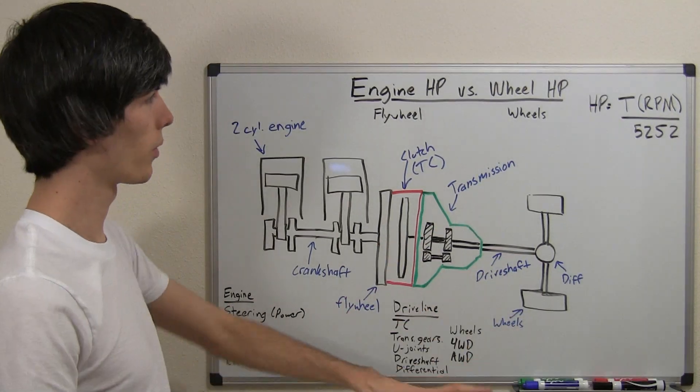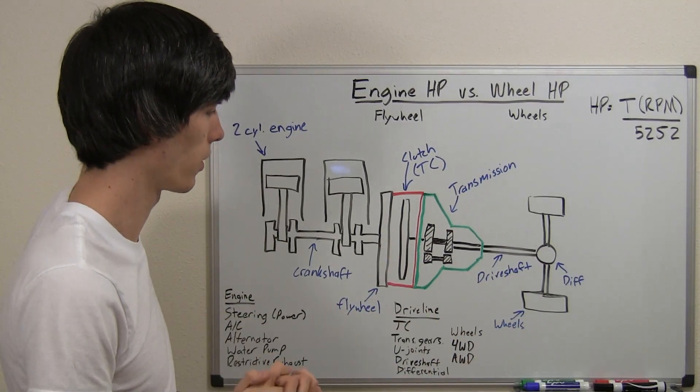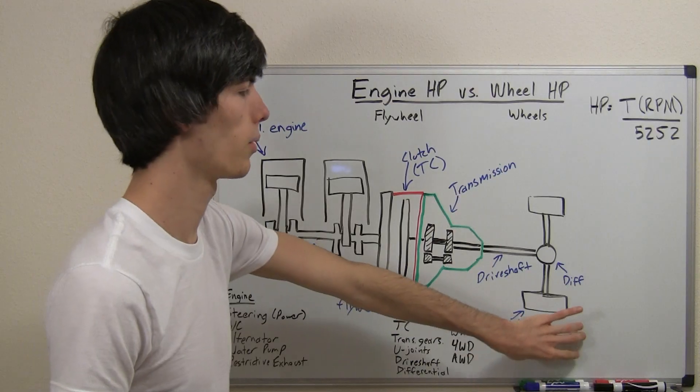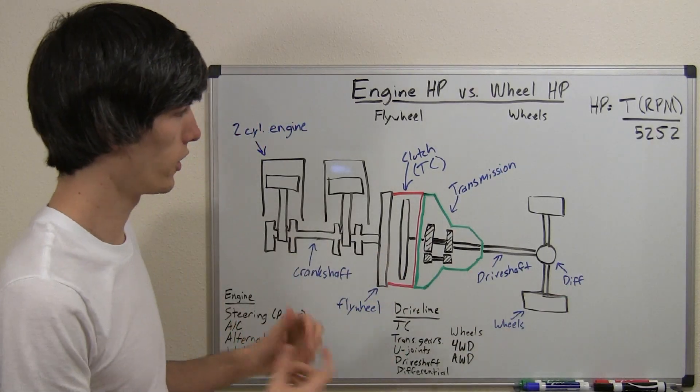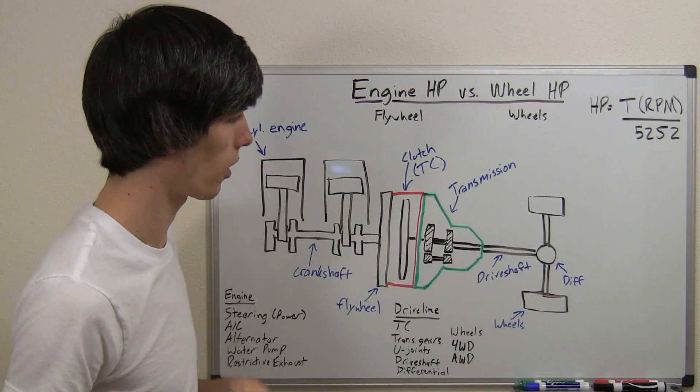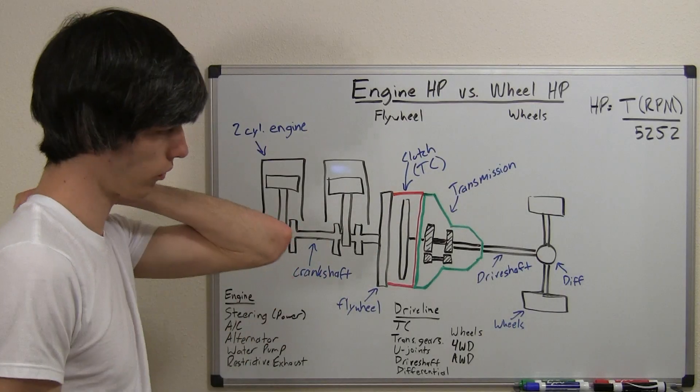On the other side, what we've got going on is wheel horsepower. The same way, you measure it using a dynamometer that you put the wheels on, and you measure the torque supplied at a certain RPM. Use your equation, and you can figure out the horsepower.